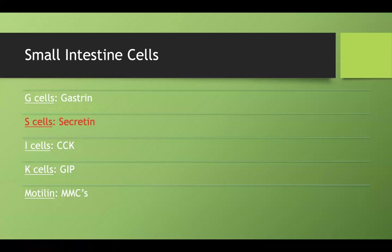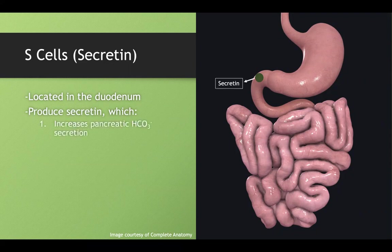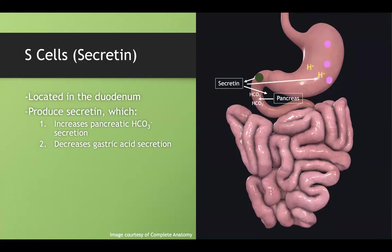S cells are located in the duodenum and produce secretin. Because acid from the stomach enters the duodenum, S cells produce bicarb to neutralize it by acting on the pancreas. Secretin can also directly decrease gastric acid secretion. Additionally, it increases sphincter of Oddi relaxation, allowing more material to flow in from the pancreas and gallbladder into the duodenum to facilitate enzymatic nutrient breakdown.